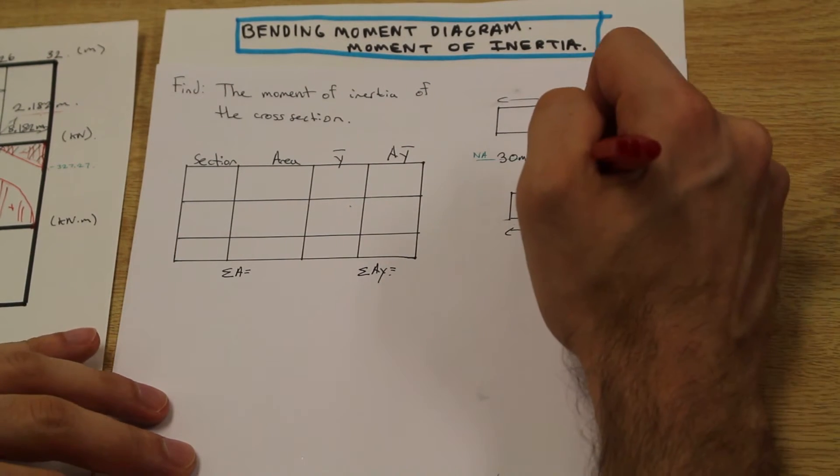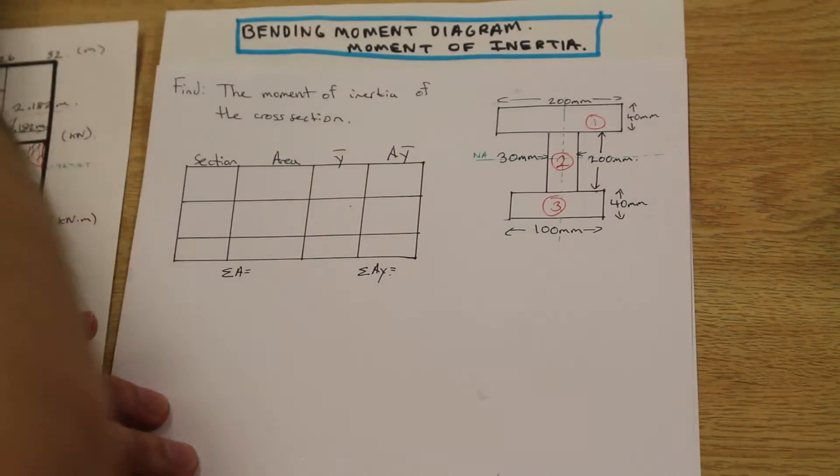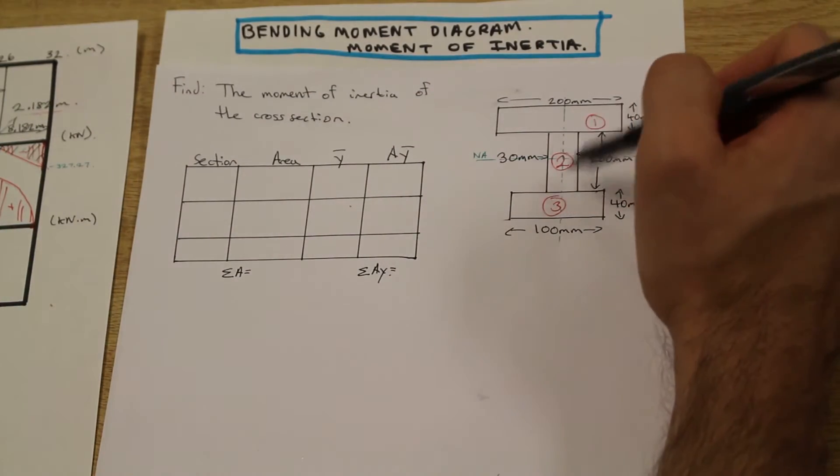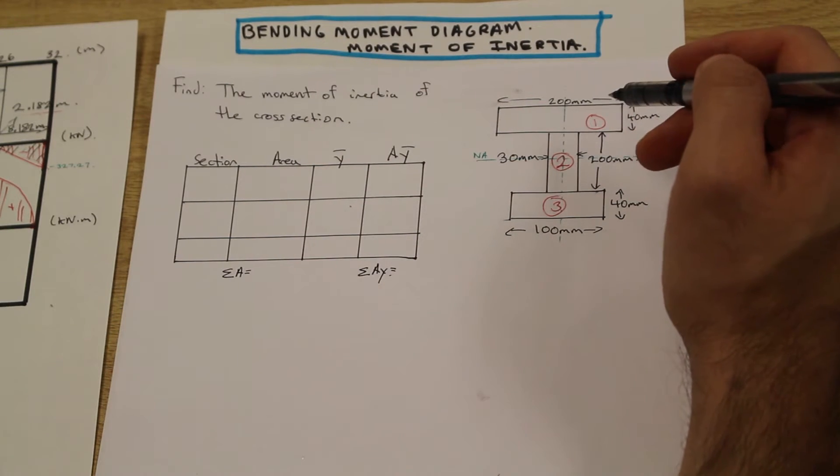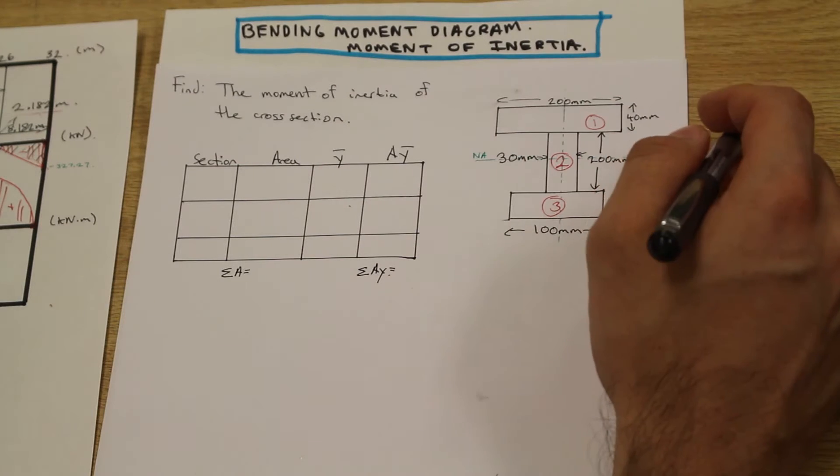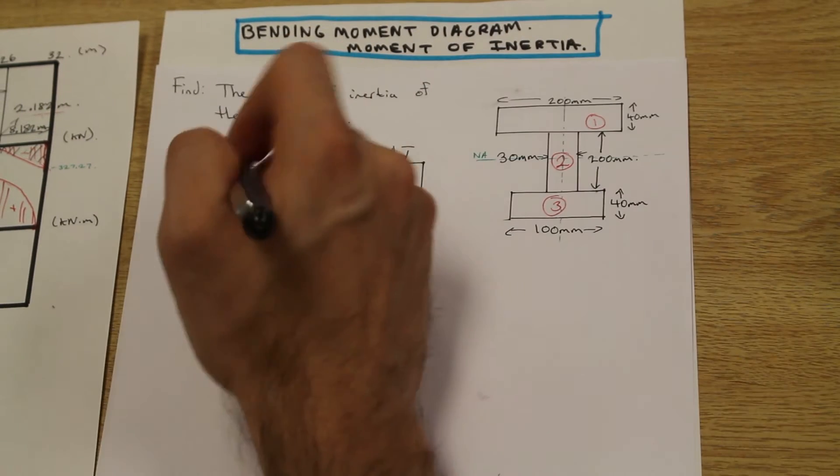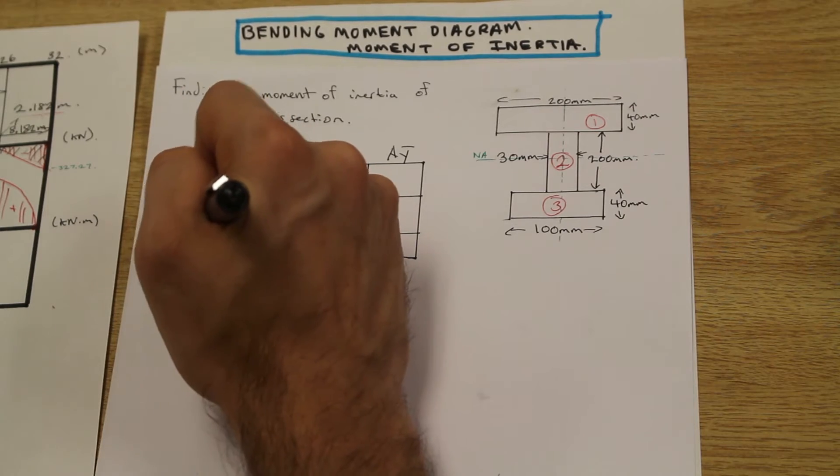We're going to number our sections, okay? So we're going to number them section 1, 2, and 3. As you can see, before I started the video, I made a little table here. I suggest you do this. It's going to help you organize your numbers and you're not going to make a silly mistake because this is just the start of the problem.